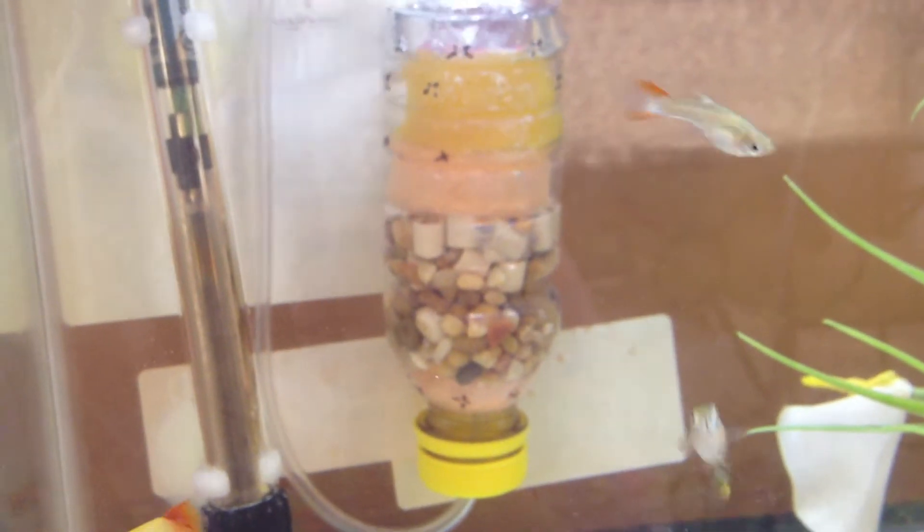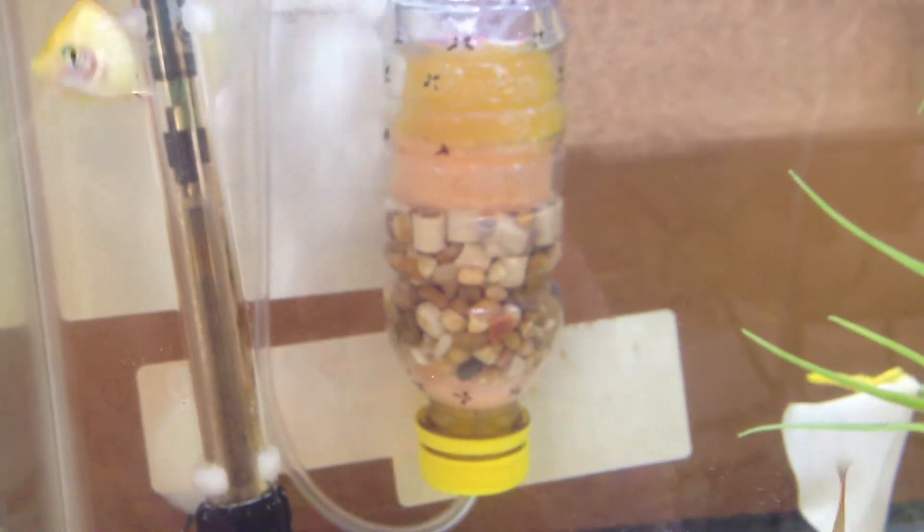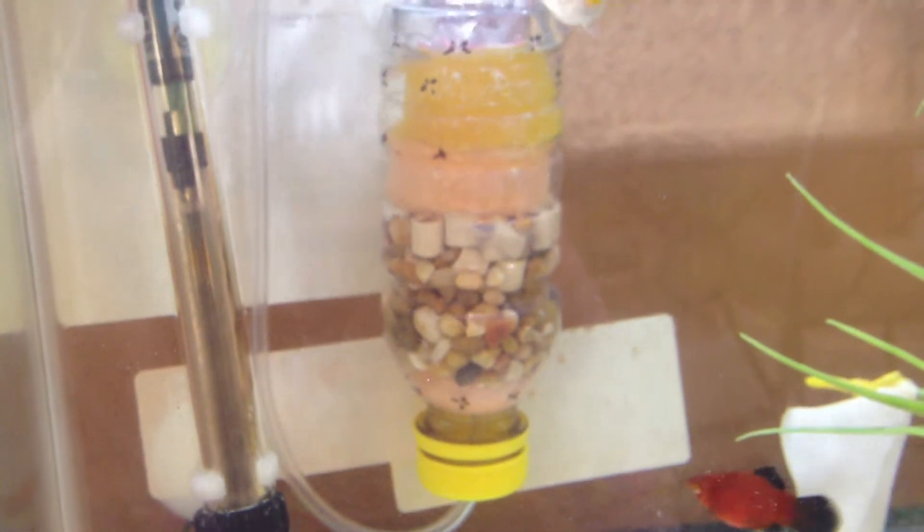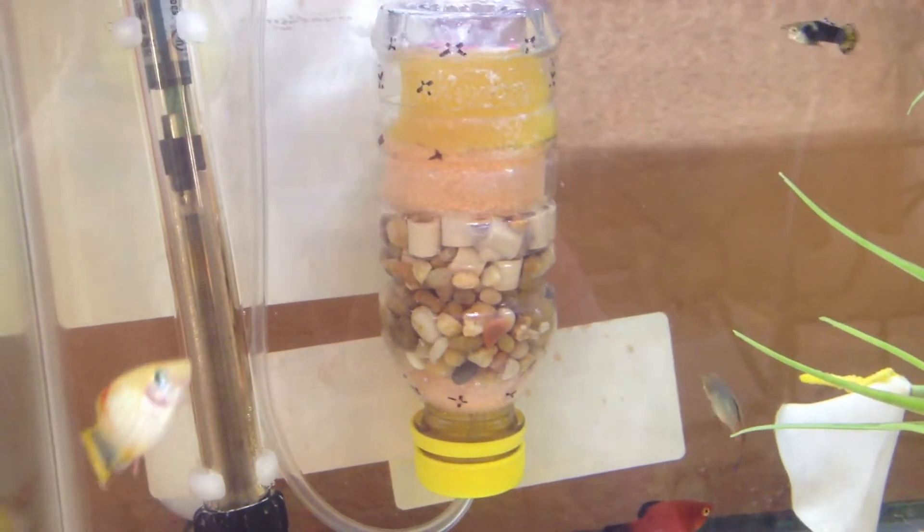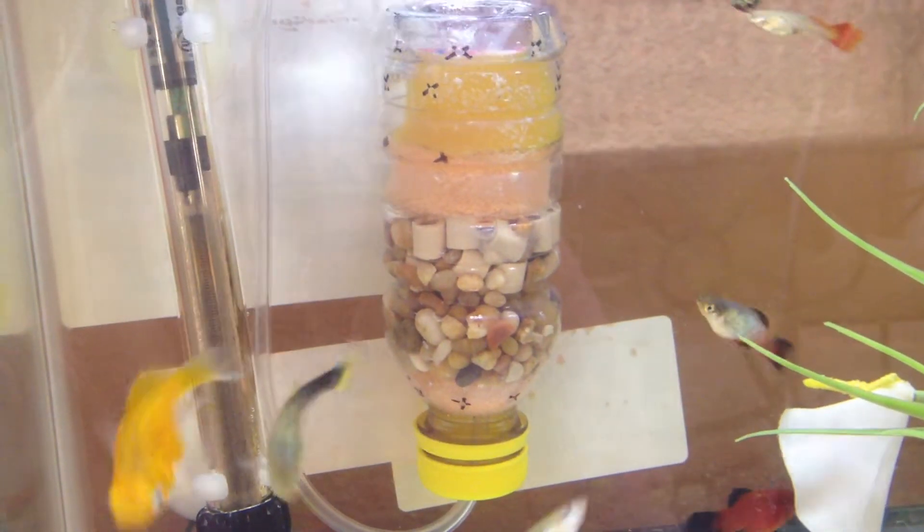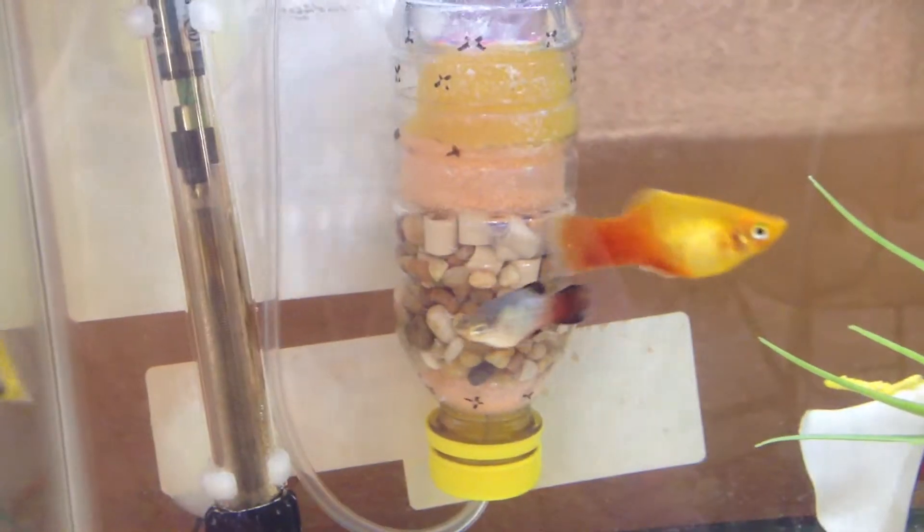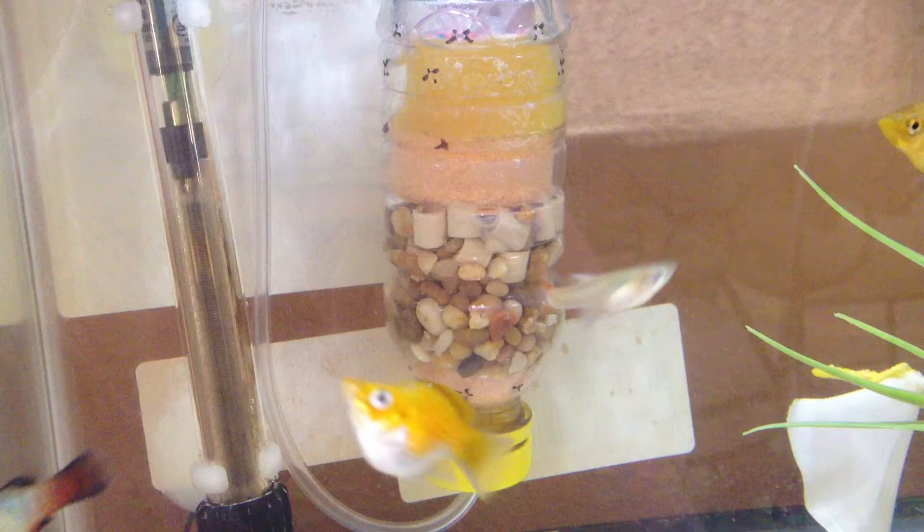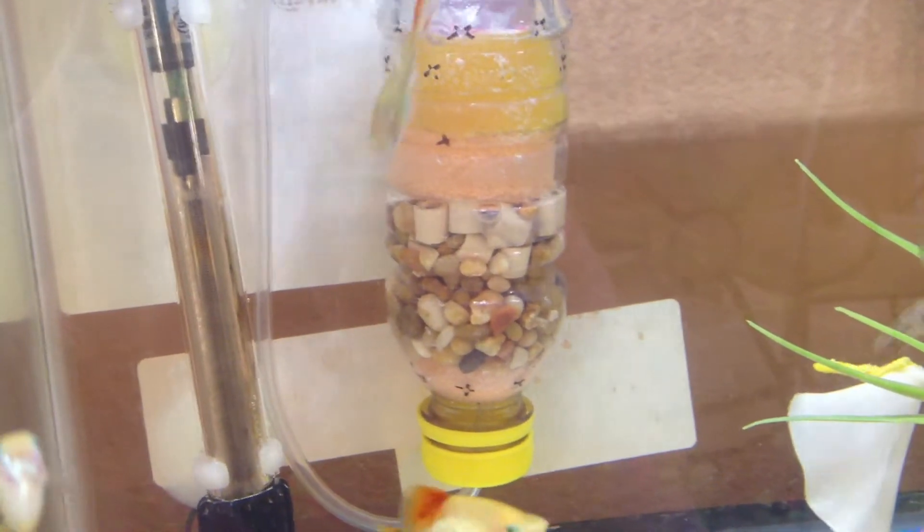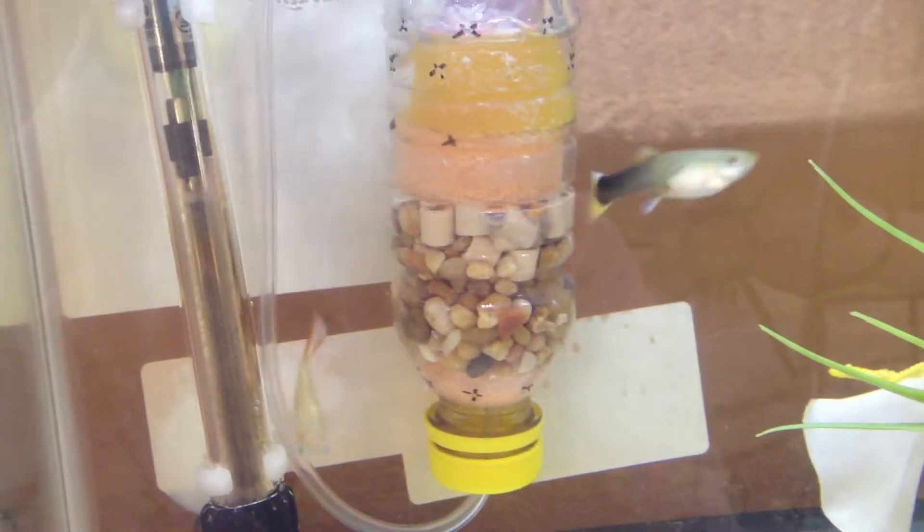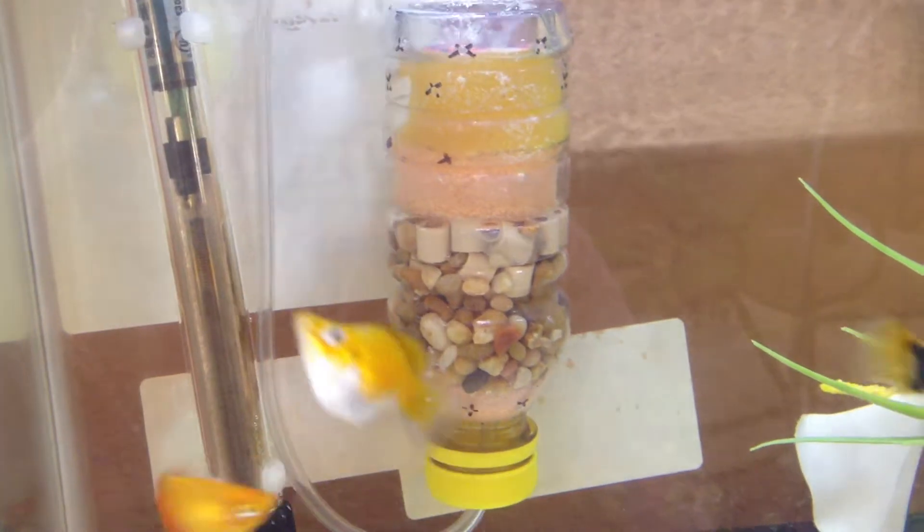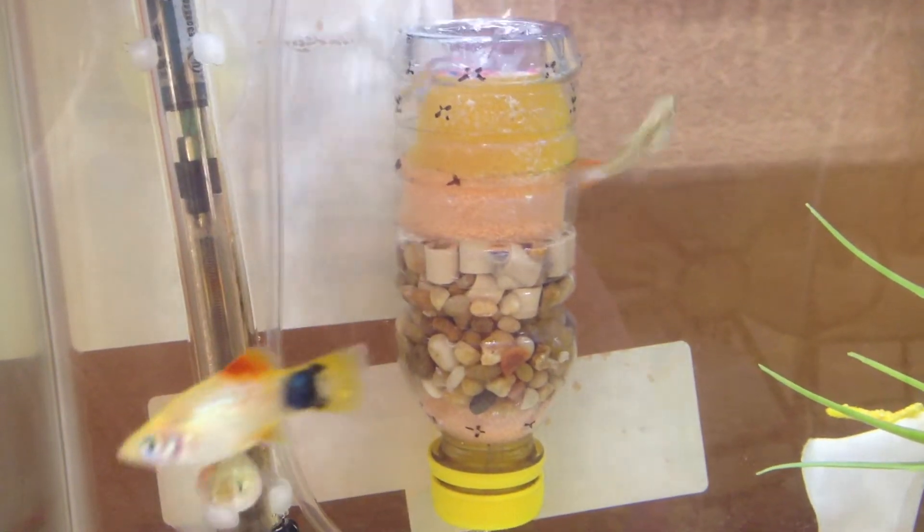I drill the hole on the bottom of the cap and thread the airline tubing in using a stopper or T-line stopper on top of that first pink sponge, and then gravel next, and then the bio-ceramic rings on the top.